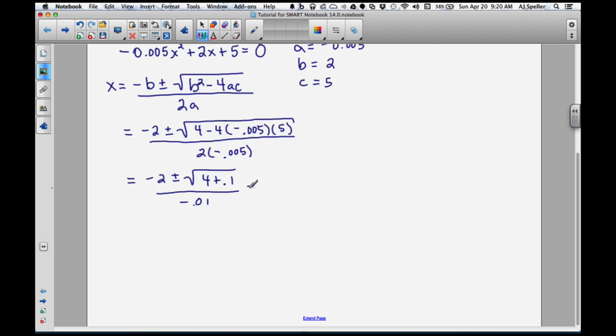When you multiply it, negative 4 times negative 0.005 times 5, you end up with a positive 0.1. And then all that needs to be divided by our denominator. Once I simplify or resolve this denominator, I end up with negative 0.01. And once I pull up my calculator and continue to resolve this, I'm going to end up with two solutions. One solution is negative 2.48.